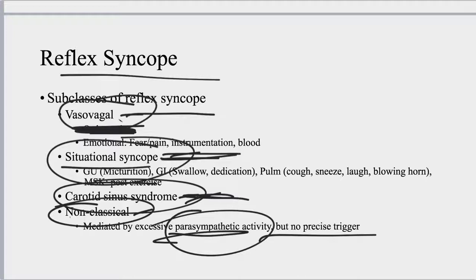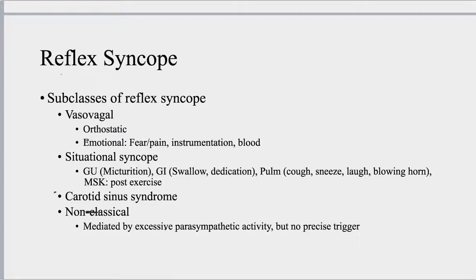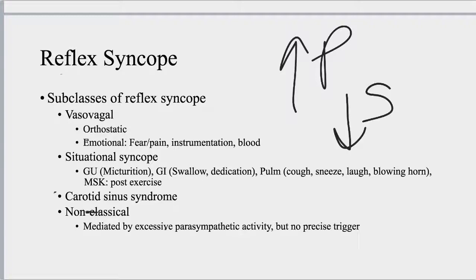Non-classical reflex syncope involves excess parasympathetic activity where the precise trigger cannot be identified. Just because you don't find it doesn't mean it's not there. If it is parasympathetically mediated syncope, it is called reflex syncope. That is the paradigm for this topic, and while there are debates in the literature about exact mechanisms, the important didactic point is to know the big picture. Reflex syncope is over-activated parasympathetic nervous system; next we discuss orthostatic syncope, which is under-activated or under-responsive sympathetic activity.